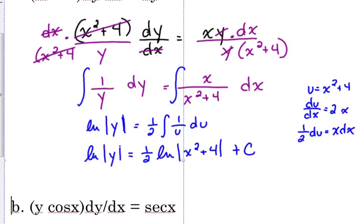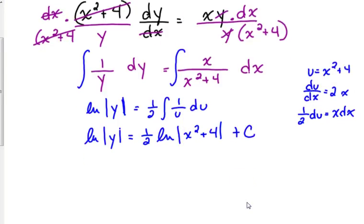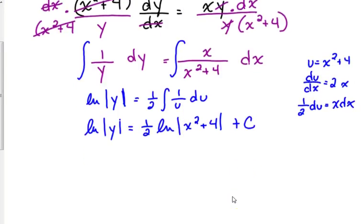I really don't need those absolute value bars with the x, because x squared plus 4 is always positive. This would be one version of the general solution — the implicit general solution, meaning you don't have it solved completely for y.